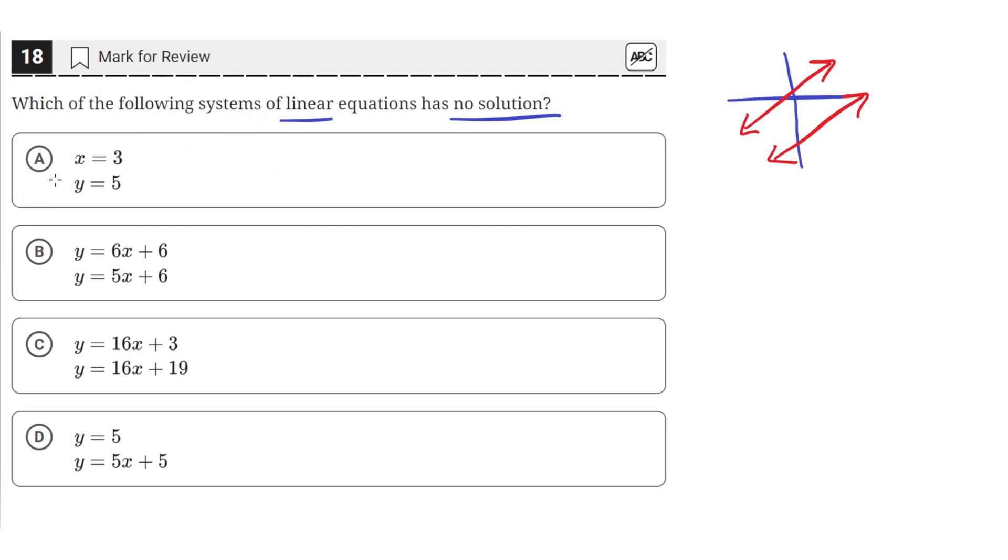Okay, so both of these are just straight lines in the x-y plane. If we drew these out, x equals 3 would just be a vertical line in the x-y plane at an x value of 3, and y equals 5 would be a horizontal line. So they would intersect at the point (3, 5), so they would have a solution. So A is incorrect.